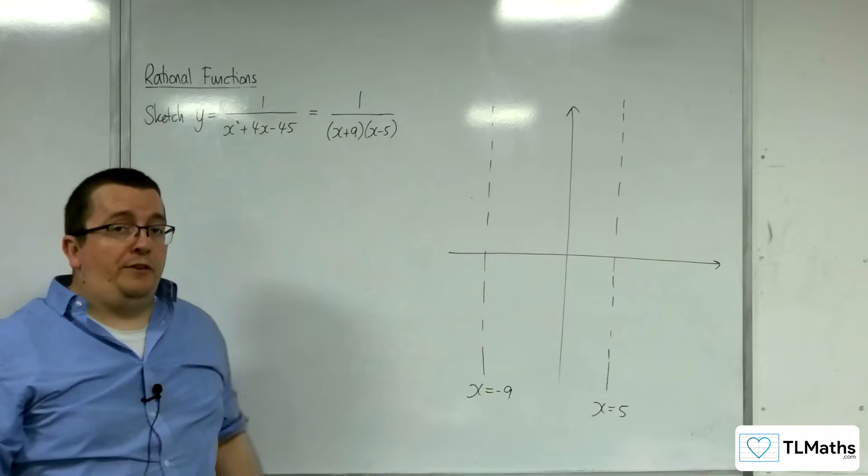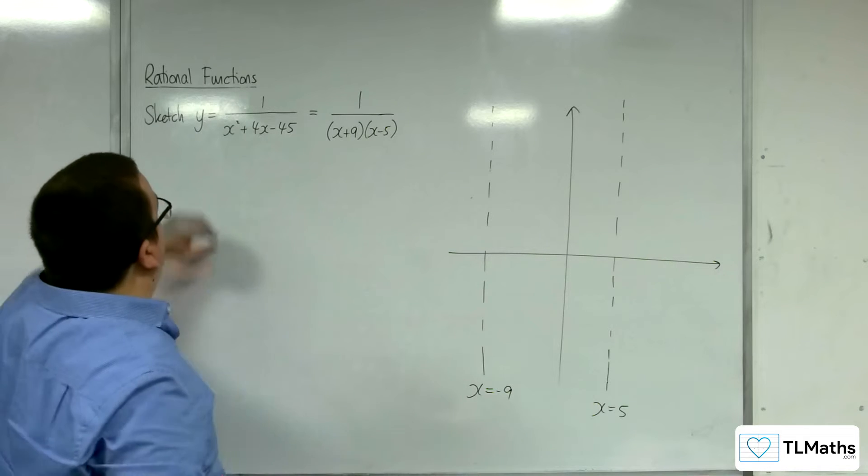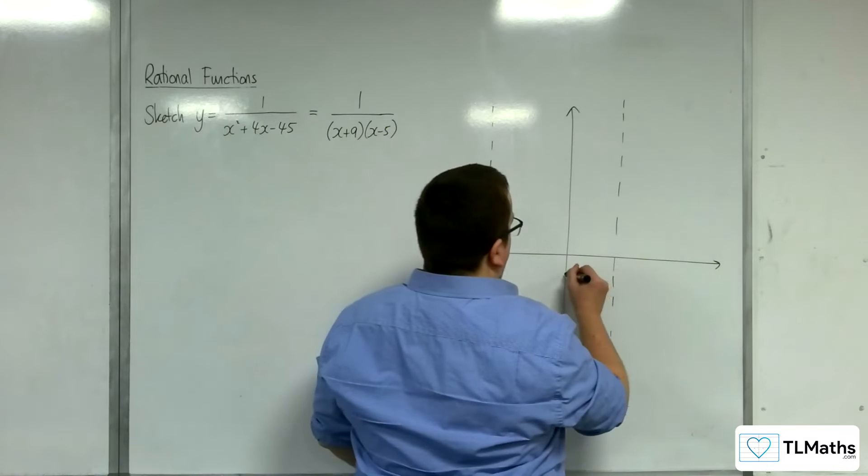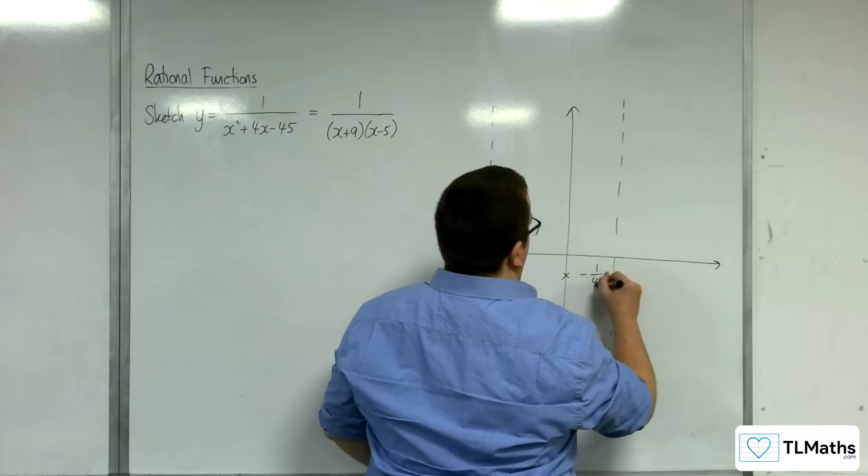How about where it crosses the y-axis? That's when x is 0. So we'll have 1 over minus 45. So minus 1 over 45 can go there.